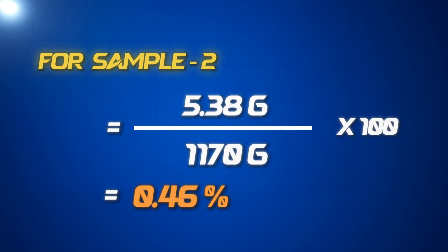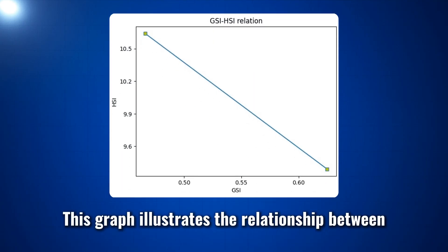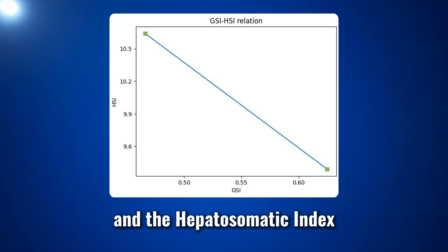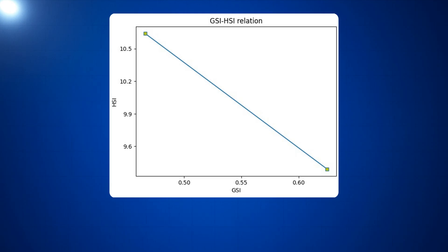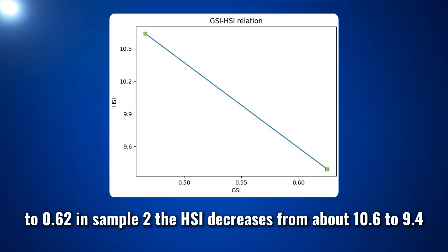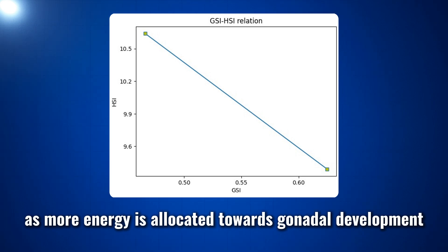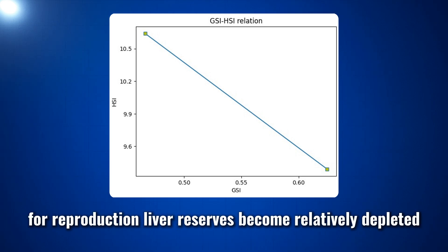This graph illustrates the relationship between the gonadosomatic index and the hepatosomatic index of our fish samples. As the GSI increases from approximately 9.4 in sample 1 to 10.6 in sample 2, the HSI decreases from about 0.64 to 0.46. This negative correlation suggests that as more energy is allocated towards gonadal development for reproduction, liver reserves become relatively depleted.